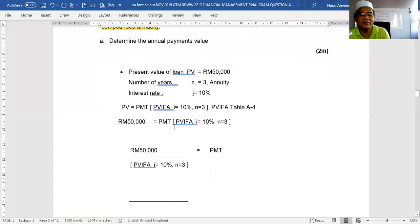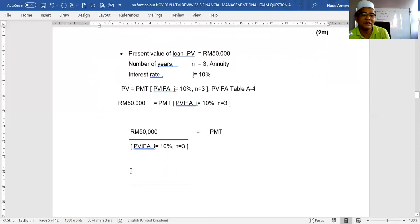And PMT, you just, from this formula, you just move this PVFA to the left. So if this is multiplied, then if you move to other side or to the left, it will be divided. And then this is, you have to refer to the table, table A-4.